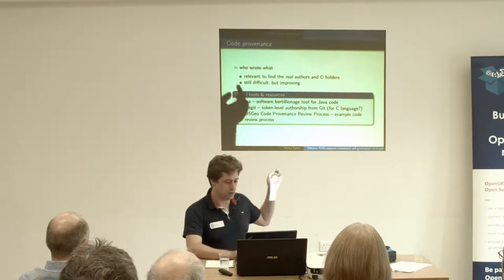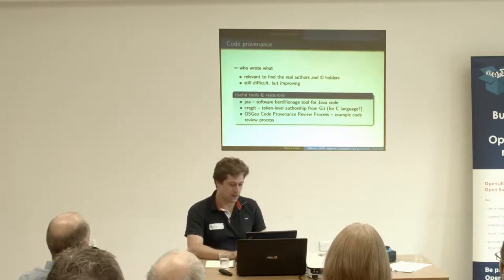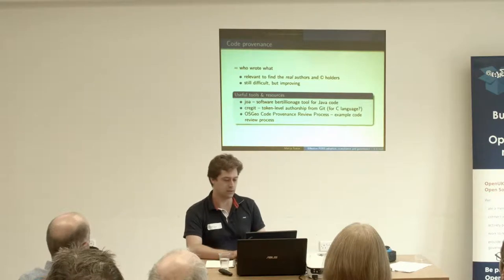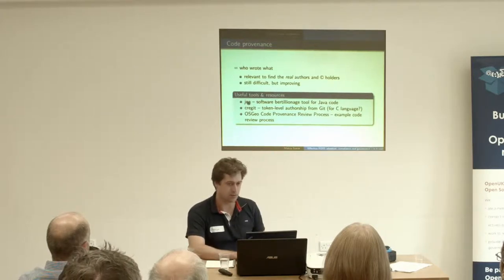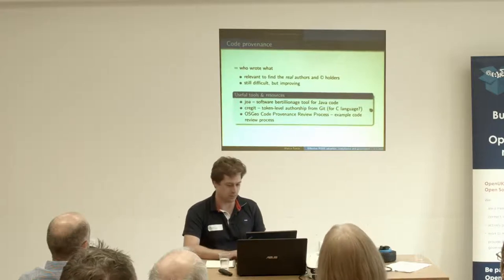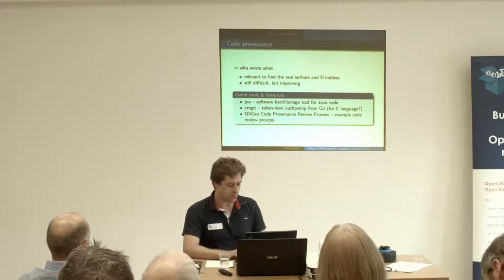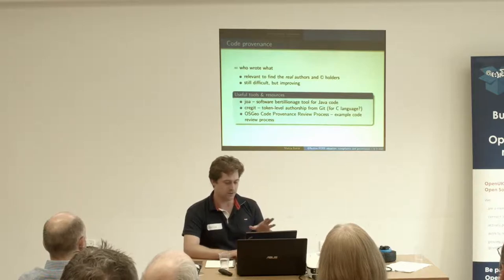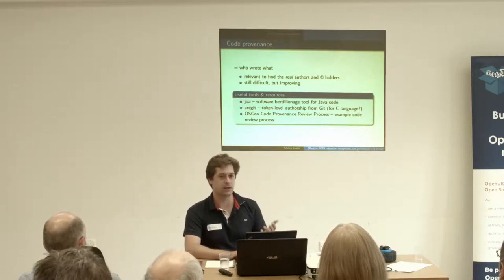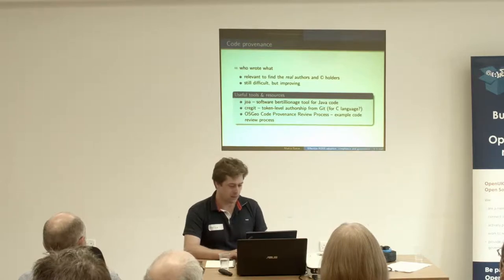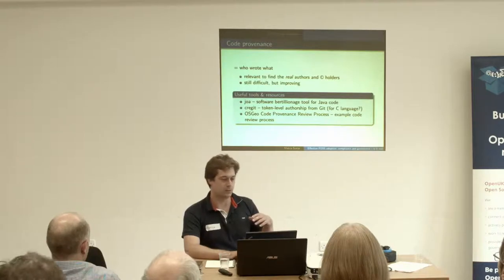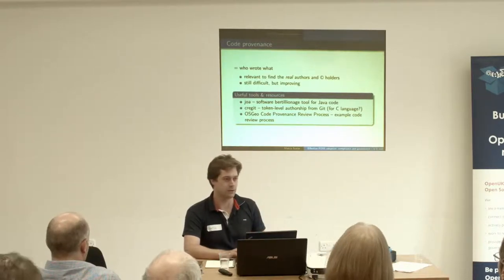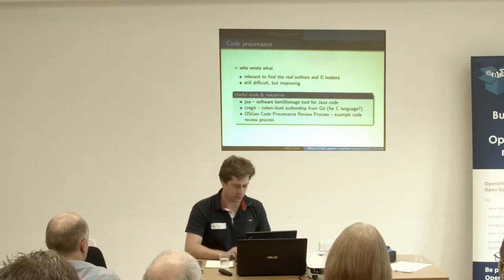There are tools like JOA and CREGIT that analyze Java and C code, especially in Git, on a token level. I'll distribute the slides later — these are clickable so the project pages open up. Those help quite a bit. They're still not perfect, but those two are more or less state of the art. The OSGEO example is interesting because they have a manual code review process, which before JOA and CREGIT was still the norm, and still largely is. But more and more automation is happening.